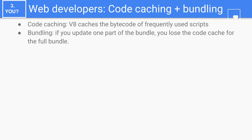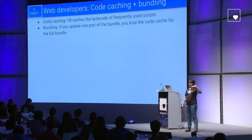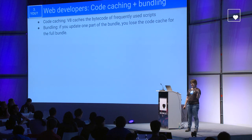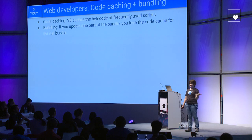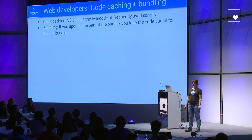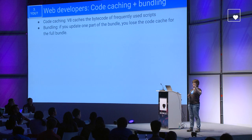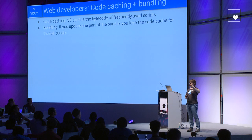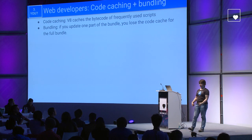V8 also has a feature called code caching, where we cache the bytecode of frequently used scripts. Whenever you load the same script frequently, V8 detects that and puts the bytecode into a cache, so the next time you load the script, we don't need to parse or compile it — we just read the bytecode directly from the cache. This affects bundling: if you bundle a lot of JavaScript libraries into one file and then update one part of it, you lose the code cache for the full bundle, so just be aware of that when bundling and updating your code.